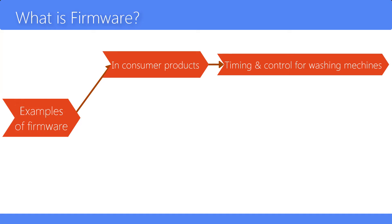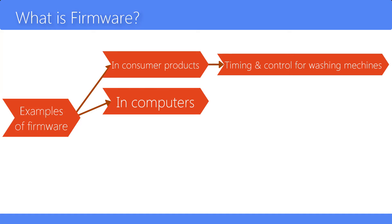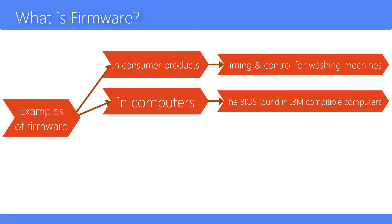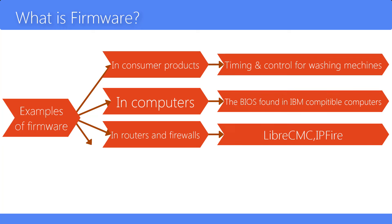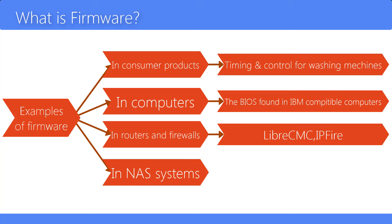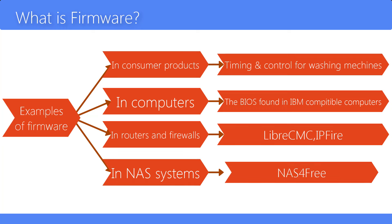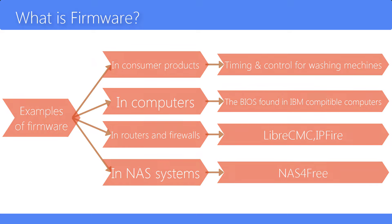Examples of firmware include: in consumer products, timing and control systems for washing machines; in computers, the BIOS found in IBM-compatible personal computers; in routers and firewalls, LibreCMC and IP5; and in NAS systems, NAS4Free.